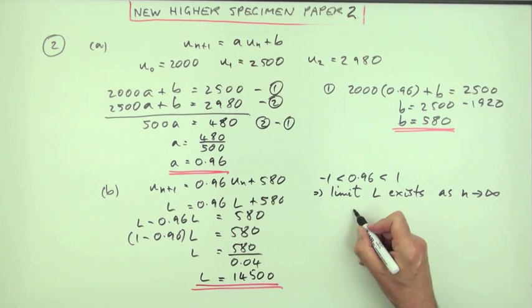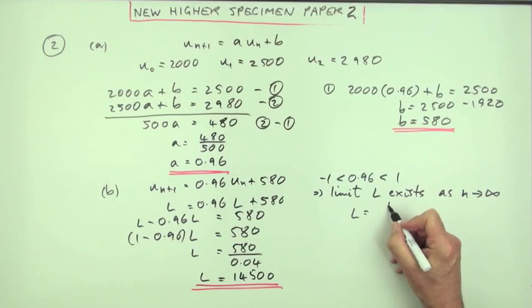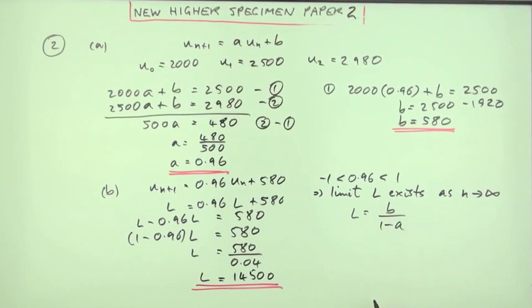Because that's just the same as jumping in with the formula. The limit equals B over 1 minus A. That's like coming in here. B is 580. And 1 minus A you would write as 1 minus.